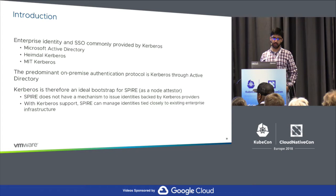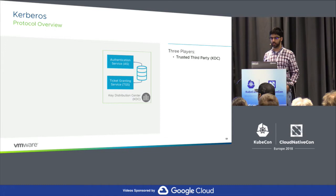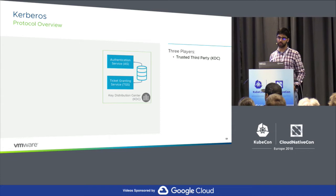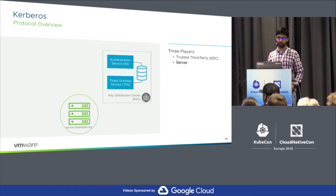SPIRE did not previously have a mechanism to use Kerberos, and with Kerberos support, SPIRE can manage identities tied closely to existing enterprise infrastructure. Kerberos is comprised of at least three players: a trusted third party known as the Key Distribution Center or KDC — which has an authentication service and a ticket-granting service — a server, and a client that users or services use to access resources.